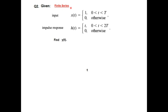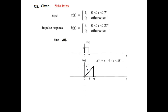Here is our second problem of a finite series. Xt and Ht are given — let's plot them to have a better idea. Xt has a value of 1 from t=0 to capital T. Ht has a value of t, which is a slope, and its range is from 0 to 2 capital T. Now, as we saw in the last problem, we flipped Ht and then slid it towards the right and found the overlapped area.